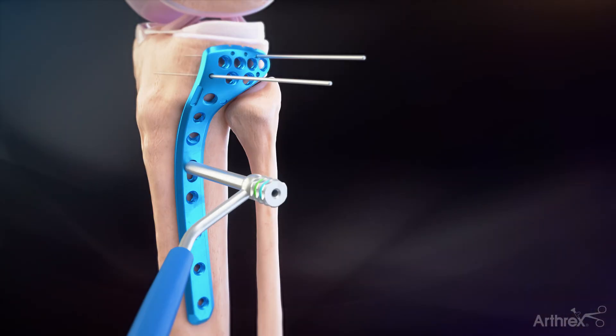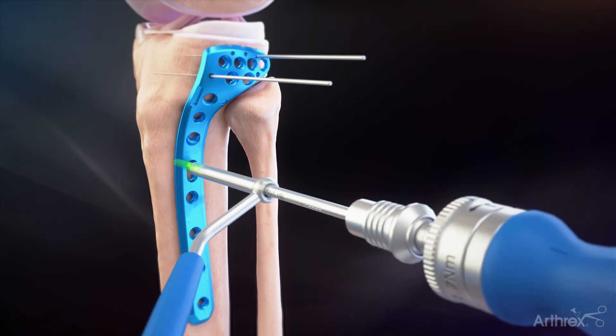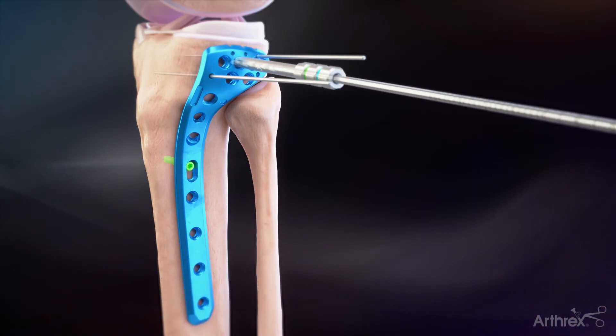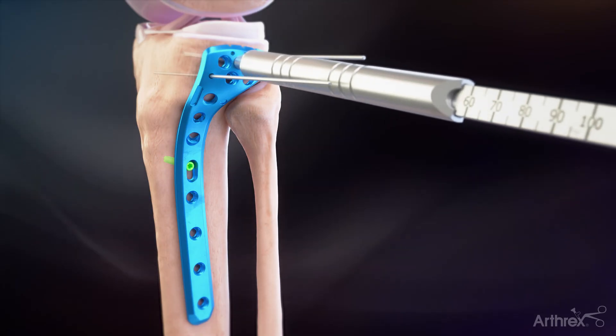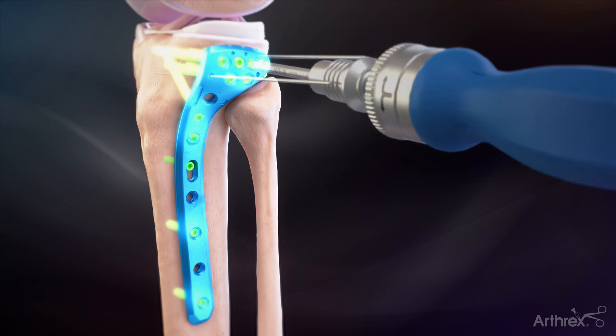For drilling at the nominal angle, the 2.8 mm fixed angle snap-in drill guide can be used for the 4.0 mm fixed angle locking screws, 3.5 mm cortical screws, or 3.5 mm variable angle locking screws.